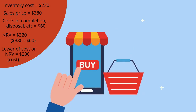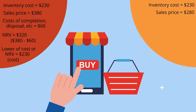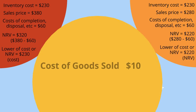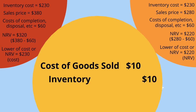However, the inventory is now out of season and we have marked it down to $280 each. Net realizable value is now $220. We again want to compare cost and net realizable value. Which is lower? This time, net realizable value is lower. We will need to write down our inventory to this lower amount. To do that, we will make an entry to debit cost of goods sold for $10 and credit inventory for $10. Now our inventory equals $220.